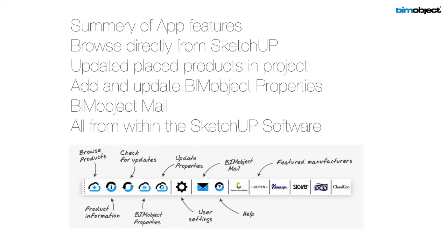To summarize the app features: you can browse directly from SketchUp, giving you access to thousands of gigabytes worth of manufacturer content — real products — all based on our single source of truth. Every product is in one place: one place for the manufacturer to update, and one place to notify you as a user that a product has been updated. You can add and update BIM Object properties, you have access to BIM Mail, and all of this is available from within SketchUp, giving you a seamless workflow to download, use, and control content.